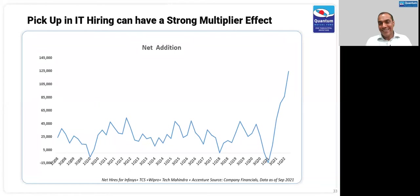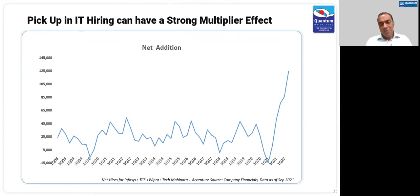We think we could be entering a cycle like the 2003 to 2007 period, where every quarter companies beat estimates. There is a strong probability that the next few years could see above-normal growth for the corporate earnings cycle after a prolonged period of slowdown. Equities is the place to stay invested over the next few years.